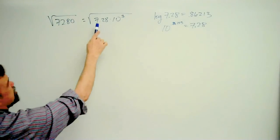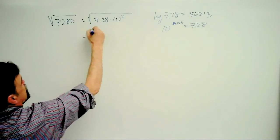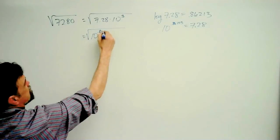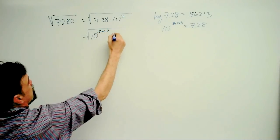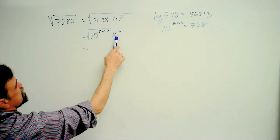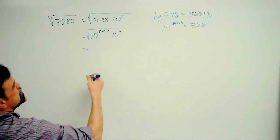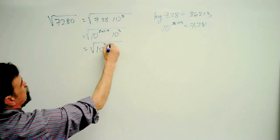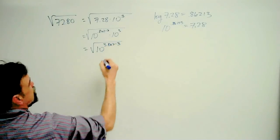So now I can rewrite this as the square root of 10 to the 0.86213 times 10 to the third. And what do you do when you have 10 to the 1 power times 10 to the other power? You add those exponents. So this is the square root of 10 to the 3.86213 power.